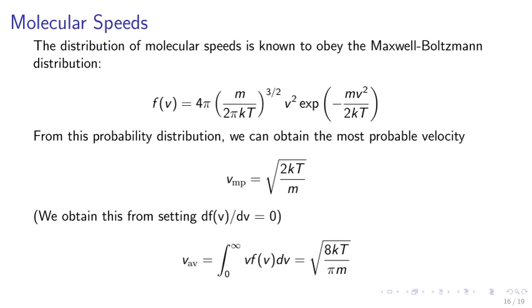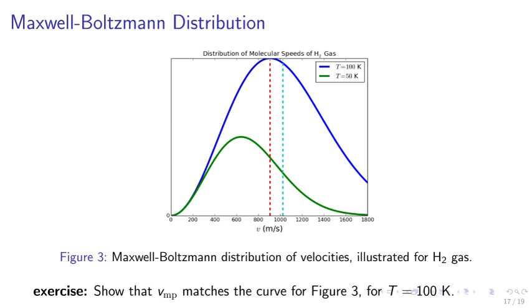Molecular speeds. The distribution of molecular speeds is known as the Maxwell Boltzmann distribution. For example, we've given the functional form for f of v, which depends on v squared times exponential of negative mv squared over 2 kT. We may calculate the most probable velocity, vmp equals square root of 2 kT over m, and the average velocity, which is square root of 8 kT over pi m. The Maxwell Boltzmann distribution velocities for H2 gas is demonstrated in figure 3. We may see that at 100 Kelvin the average speed is much higher than at 50 Kelvin, which is the green curve. Note the difference between the most probable and the average velocity.